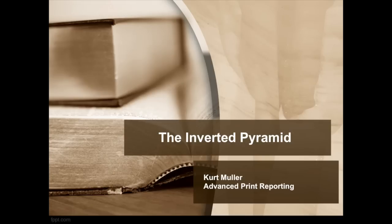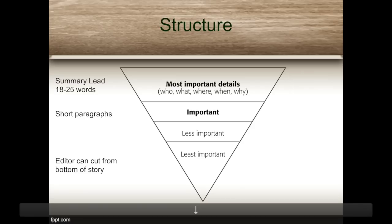We're going to look today at the inverted pyramid type of story, which is the most common type of structure you will see in newspaper reporting and across the journalistic world. It is considered a basic building block of journalism. It has its advantages, it has its disadvantages, but in order to write well and write clearly, you need to master this format. So let's take a look at the basic structure right now.